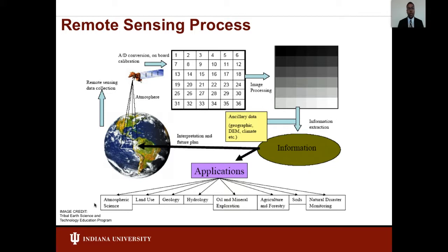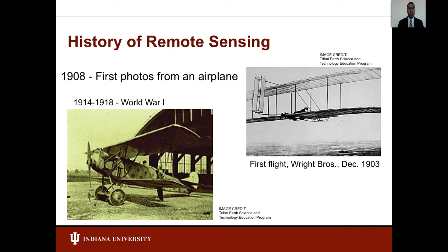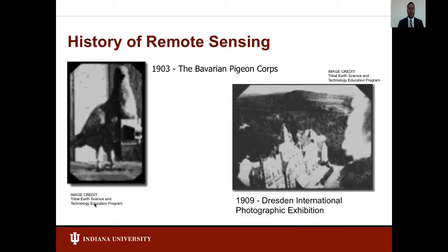To give a historical perspective on the use of remote sensing, the first photos from a plane were taken in 1908 and used in World War One for enemy surveys. The war improved camera quality and photos were taken at 15,000 feet. Another historical example is the 1903 Bavarian pigeon corps, where carrier pigeons with light cameras were used to take pictures every 30 seconds. This pigeon photography was displayed in 1909 at the Dresden International Photographic Exhibition.